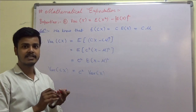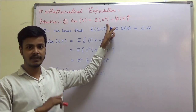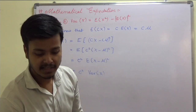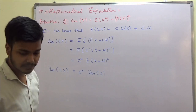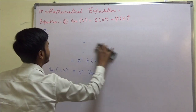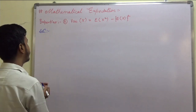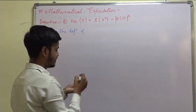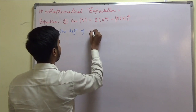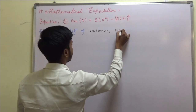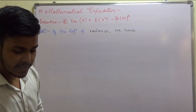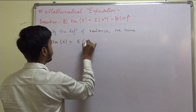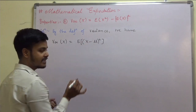Let me tell you one thing: when we discussed the definition of variance in the previous video, I forgot to write X squared — I had written X. So please make the correction. By the definition of variance, variance of X is equal to expectation of (X minus mu) whole square.